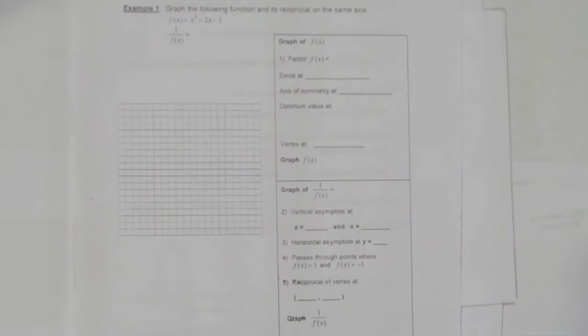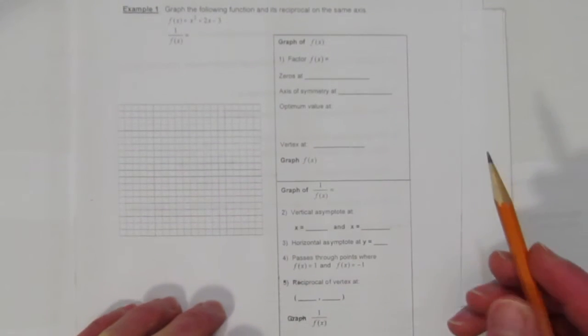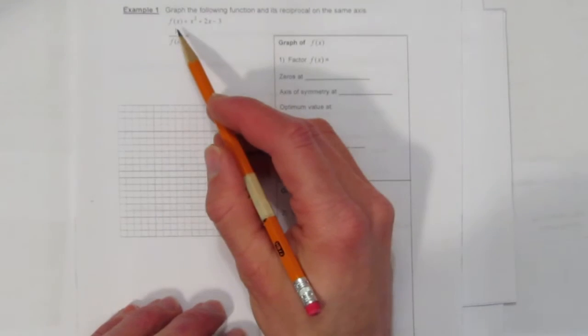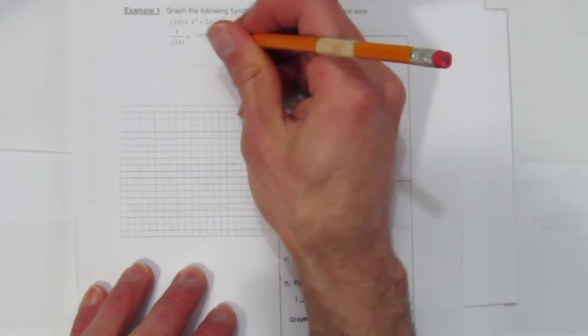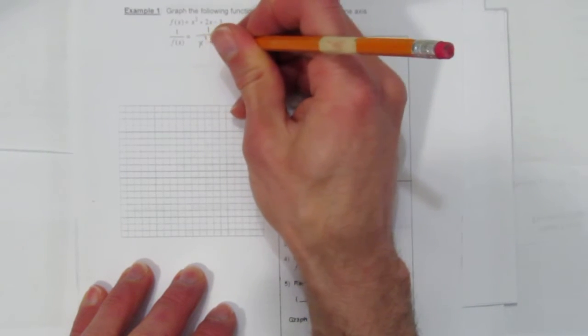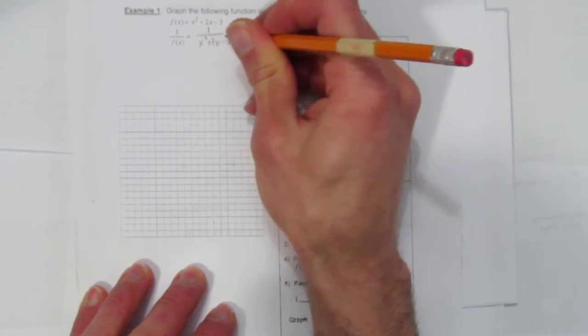In this video, we'll look at graphing the reciprocal function. In particular, this will be a quadratic function that has two zeros. So the function is f(x) = x² + 2x - 3. We're going to graph 1 over (x² + 2x - 3).